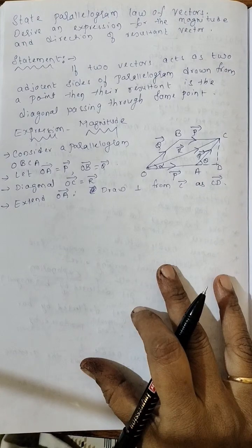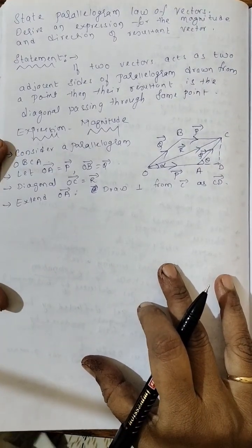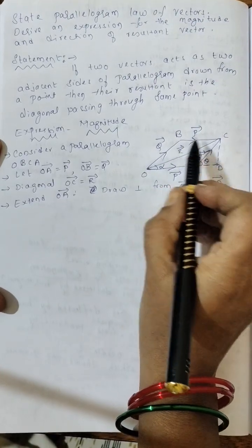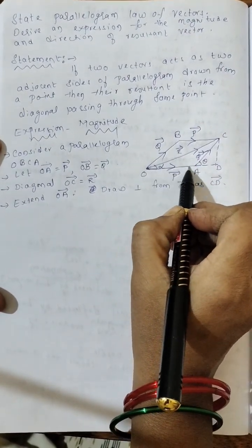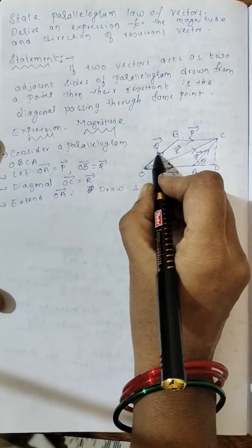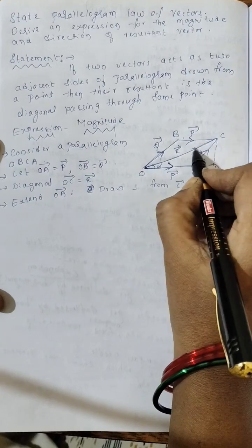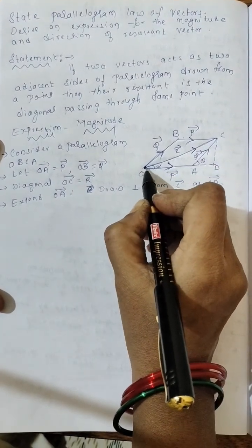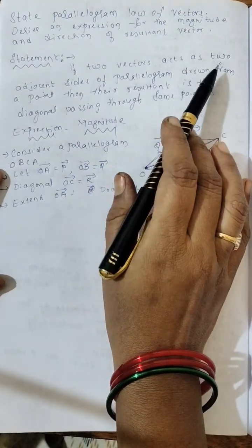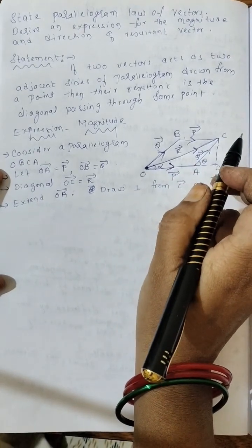The first question is: State the Parallelogram Law of Vectors and derive an expression for the magnitude and direction of the resultant vector. If two vectors act as two adjacent sides of a parallelogram drawn from a point, then their resultant is the diagonal passing through the same point.